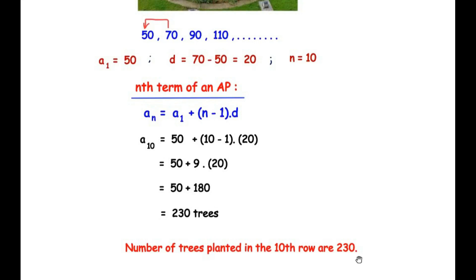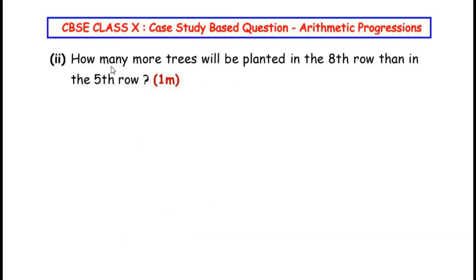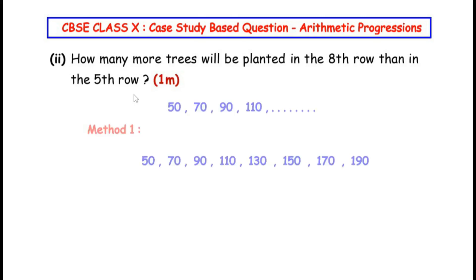The second sub-question asks: how many more trees will be planted in the 8th row than in the 5th row? We need to find the difference in the number of trees between the 8th and 5th rows. The sequence again is: 50, 70, 90, 110...